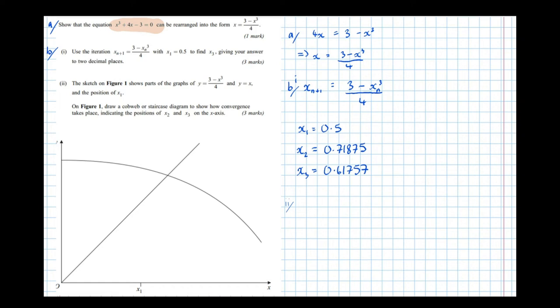So cobweb or staircase diagram will perform the same method every time, and depending on the shape of the graph, we'll either get a staircase or a cobweb form. So the method is, and we discussed this in a previous video, start at our initial guess, there it is, then go up to the curve, vertically up. Once we're there,